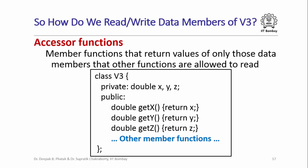So if the data members of class V3 are going to be private, how do we read or write them? There is a preferred way of doing it through what are called accessor functions. These are functions that return values of those data members that other functions are allowed to read. For example, in class V3 I have declared X, Y, Z as private data members but I have declared getX, getY and getZ as public accessor member functions, which can be used anywhere in the program to access the values of the private data members X, Y and Z.